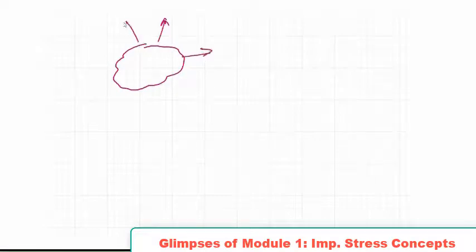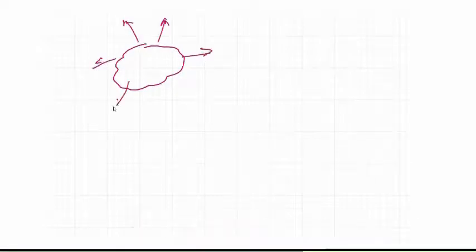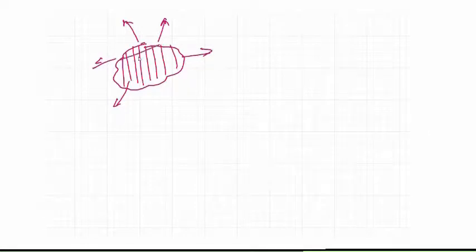Just take any object having forces in various directions. Now we want to study this. Definitely there could be some deformation, so what we do is that we try to mesh this and we want to take a very tiny part of this, and this tiny part is taken or considered as a cube.